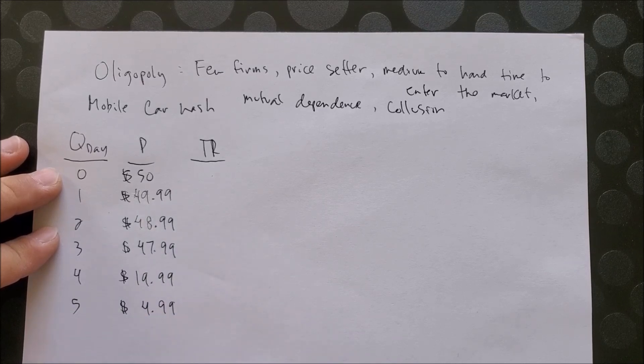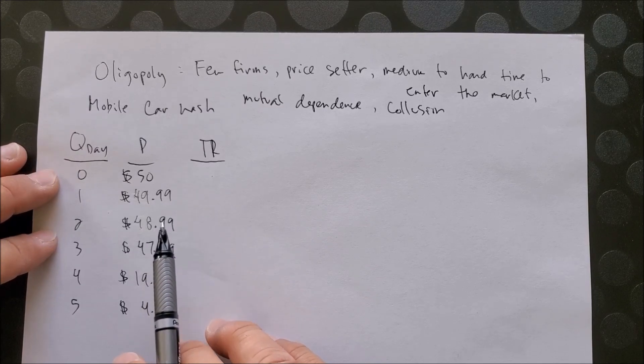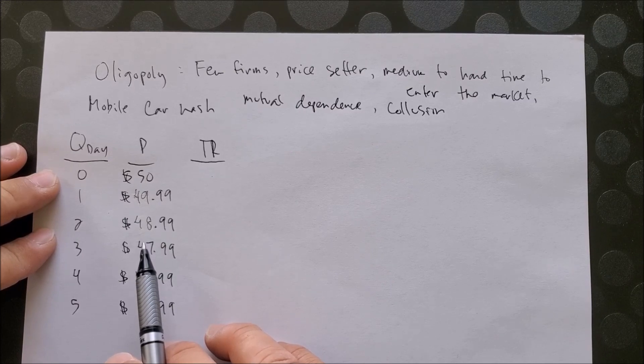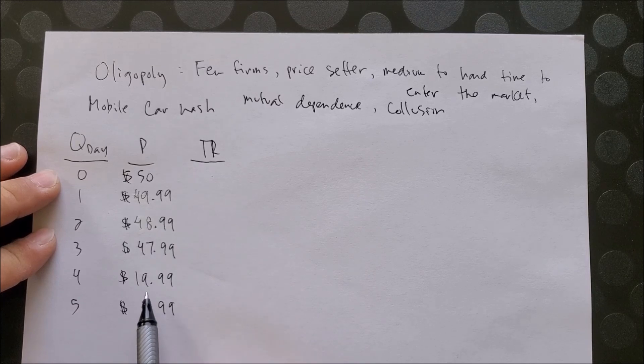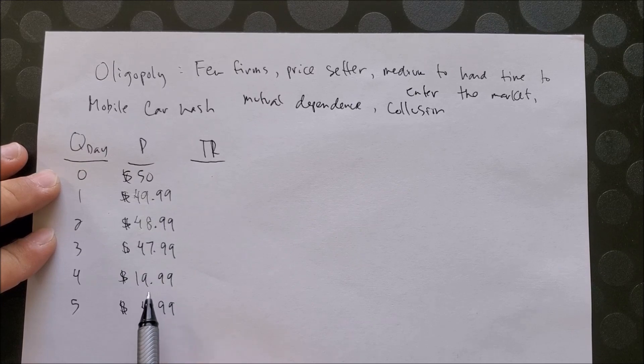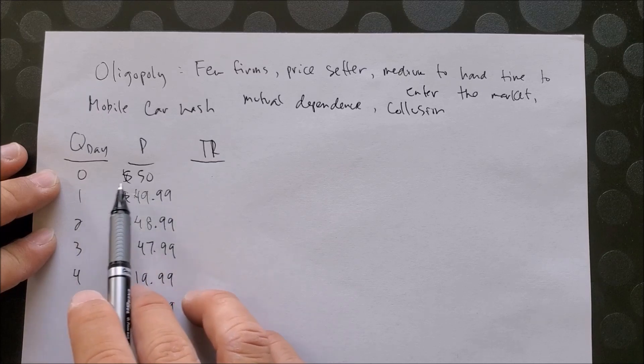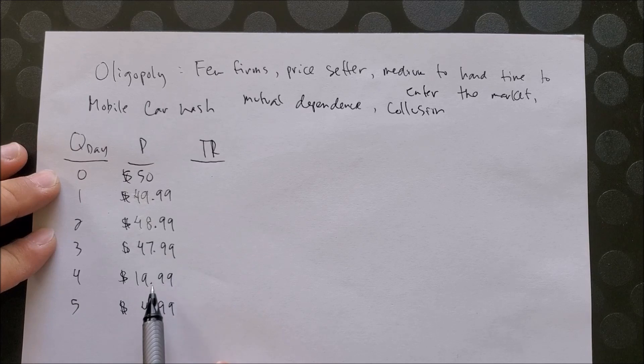But let's say you want to increase the number of vehicles you wash. You may have the incentive to renege on this cartel, on this gentleman's honor of keeping prices set, and you might actually decrease price on your own without consulting the other owners dramatically. This explains why we see at the price of $50 no vehicles washed and then you dramatically decrease the price down to $19.99 and at the very end to $4.99.